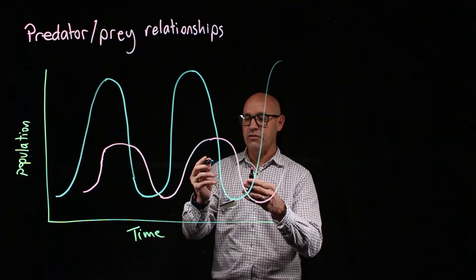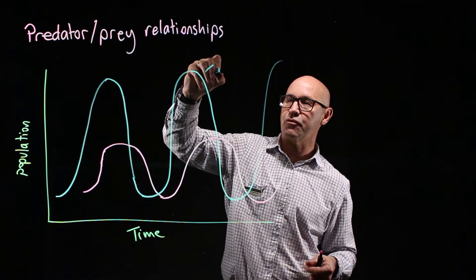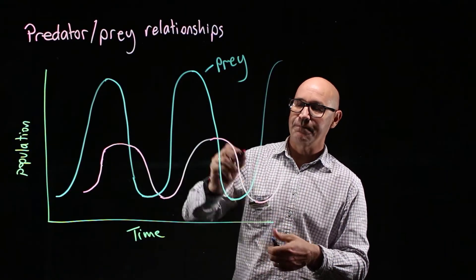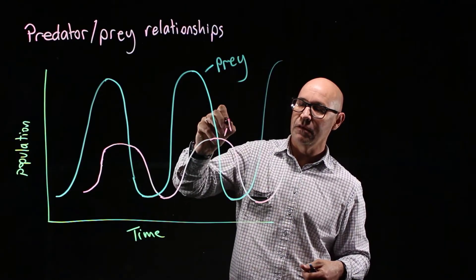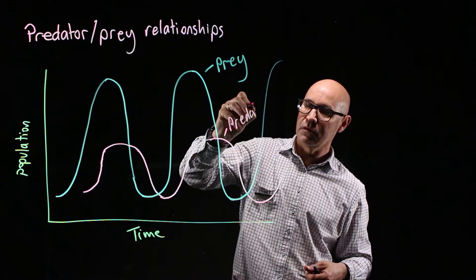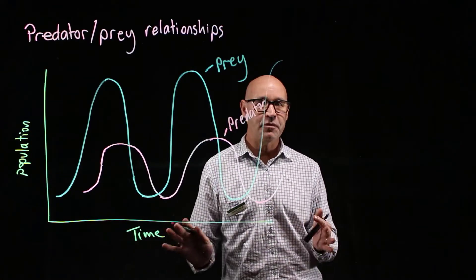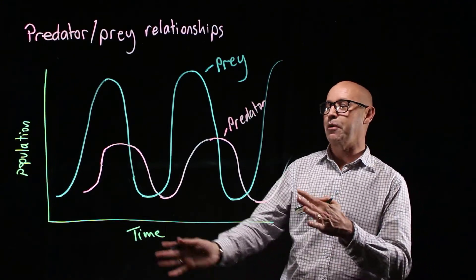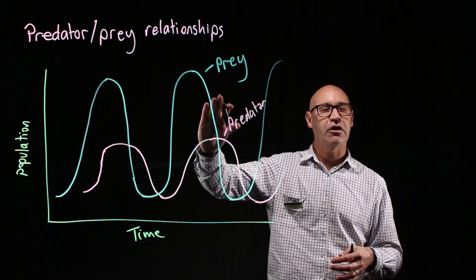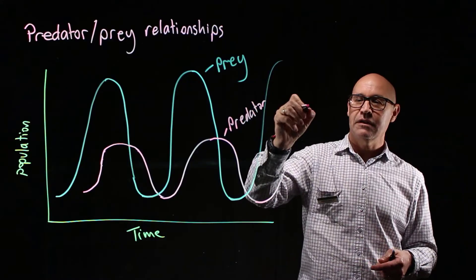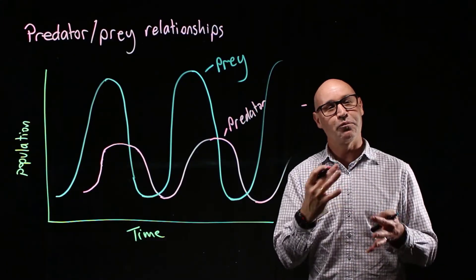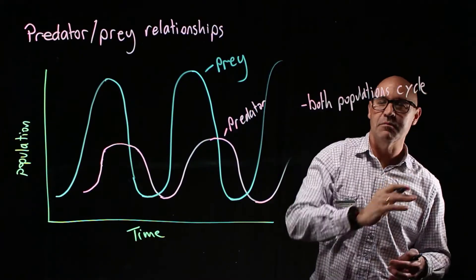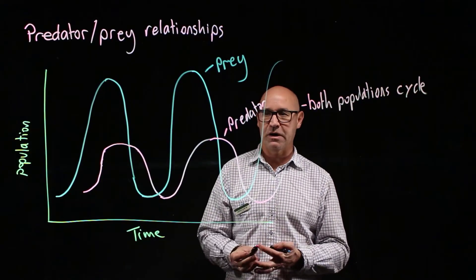I'm going to go ahead and label this. This is the prey, and this is our predator population. Now, there are a couple of observations I want you to make. Firstly, both populations cycle and have the same pattern of boom and bust — they both cycle up and down.